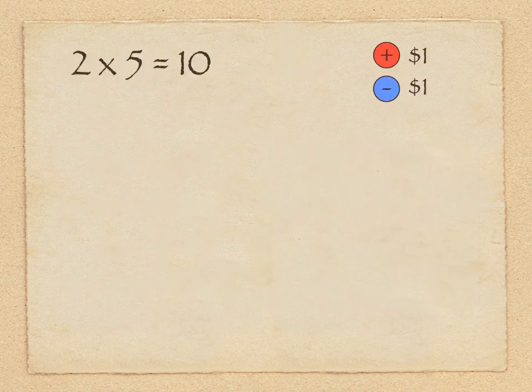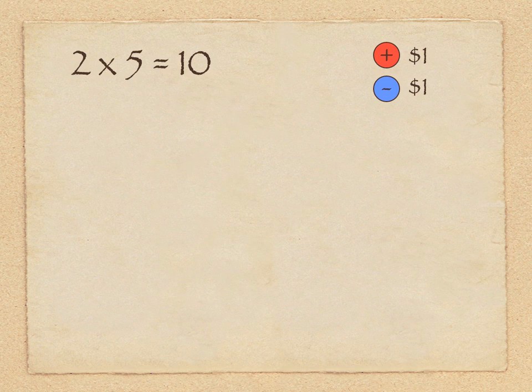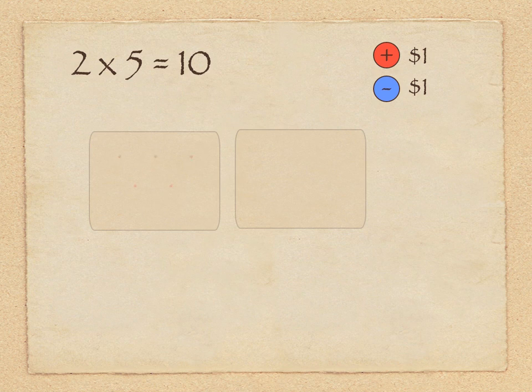First of all, let's look at 2 times 5 equals 10. And I have some tokens that I'm going to use. I'm going to use red for positive and blue for negative. And I just think of red as hot and blue for cold.